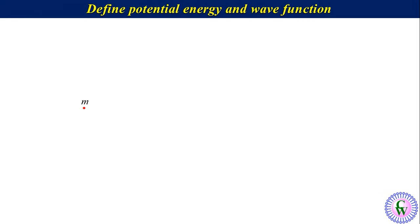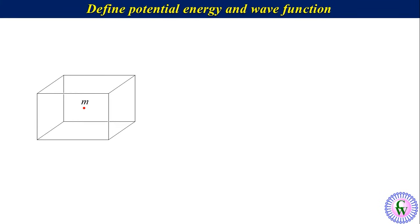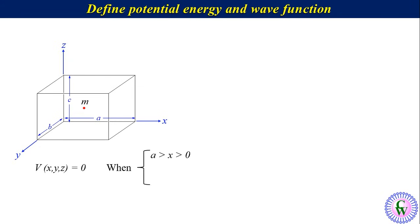Consider a particle with mass m confined within a three dimensional box having edges a, b and c parallel to the x, y and z axes respectively. The potential energy anywhere inside the box is zero, while infinity at the wall and outside the box. Thus we can write: potential energy V(x,y,z) is equal to zero when x is between 0 to a, y is between 0 to b, and z is between 0 to c, and V(x,y,z) is equal to infinity elsewhere.